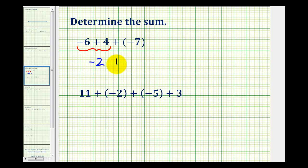So now we have negative two plus negative seven. Again, thinking of this in terms of money, negative two is like a loss of two dollars plus a negative seven, which is like a loss of seven dollars. If we lose two dollars and then lose seven dollars, we have a total loss of nine dollars.